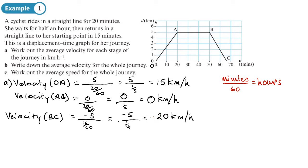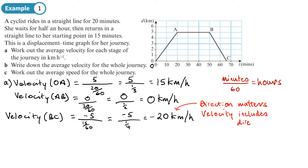We wouldn't get a negative value with speed, but we do with velocity. The important point is that direction matters. Velocity includes direction — if you're going backwards, you get a negative displacement and therefore a negative velocity.